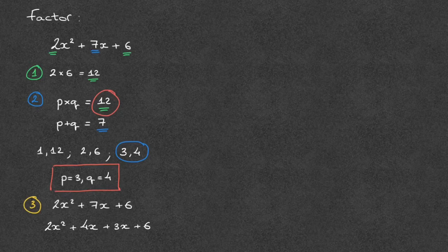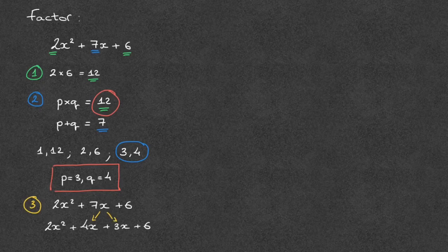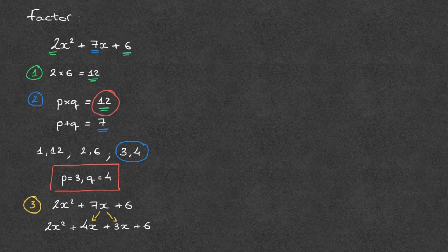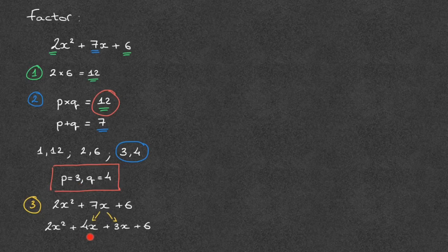In other words, we've split this 7x into 4x plus 3x. And to be clear, I know that I have to split 7x into 4x and 3x, thanks to the two numbers that we found in step 2, which were 4 and 3.